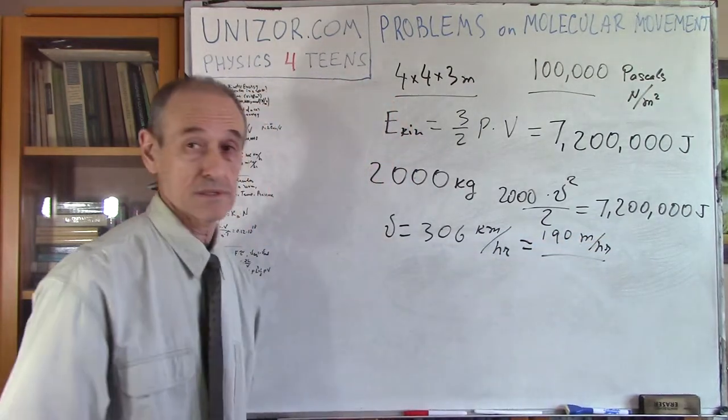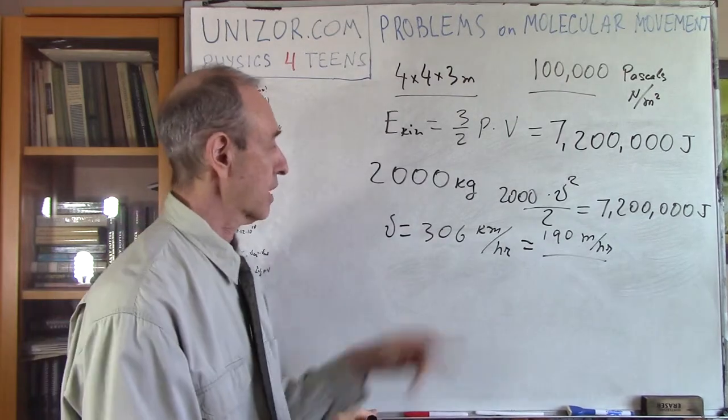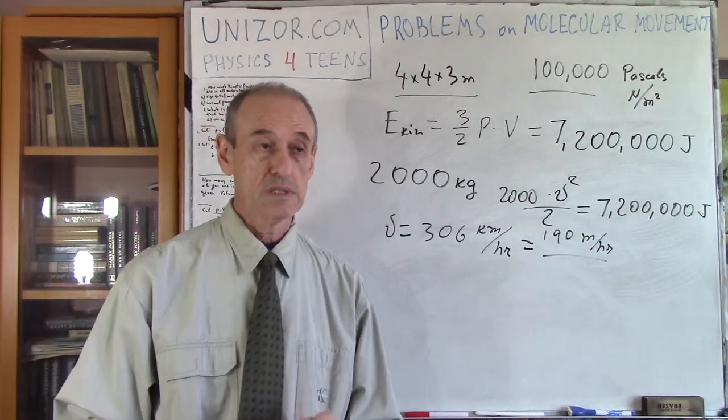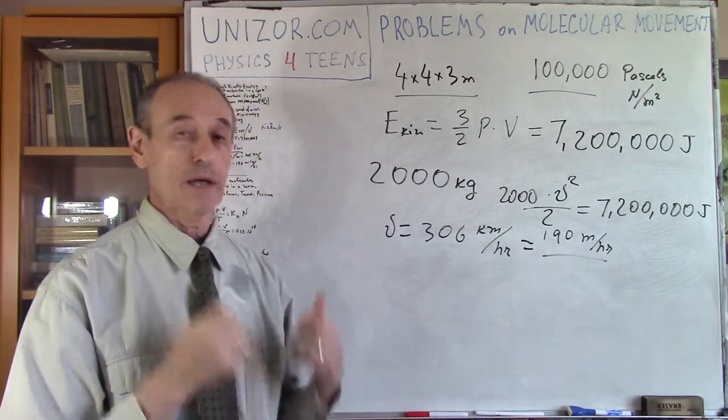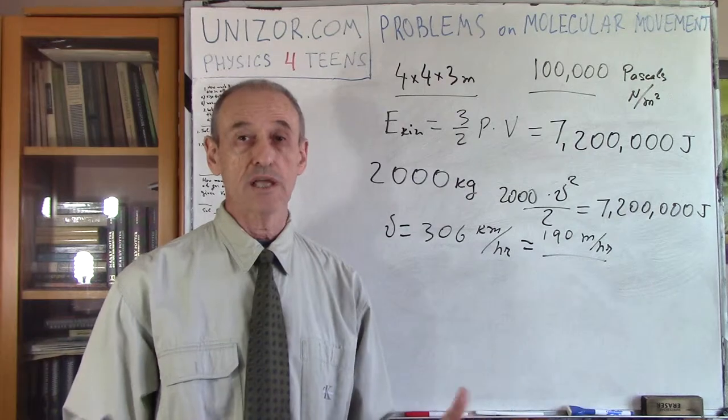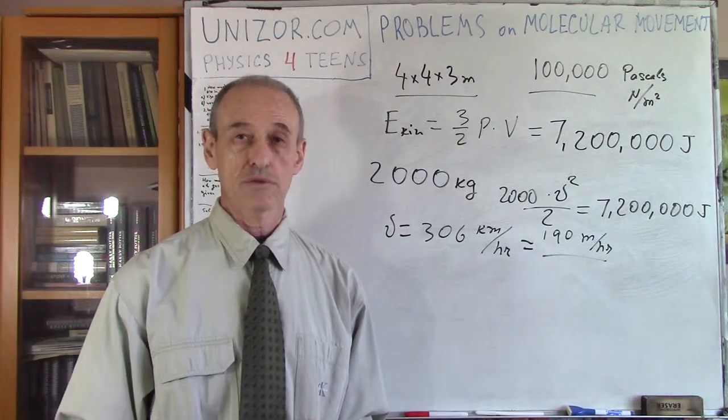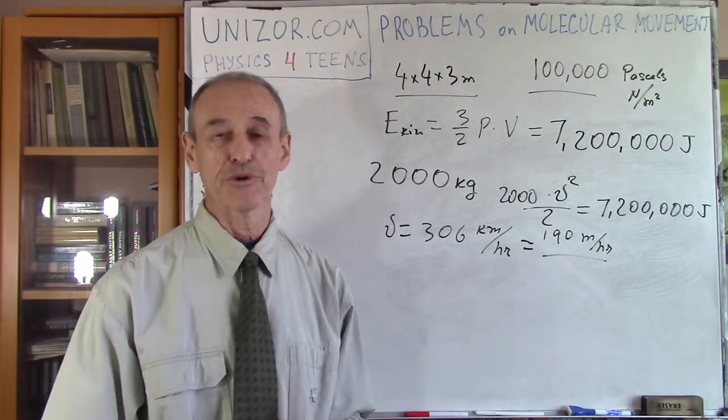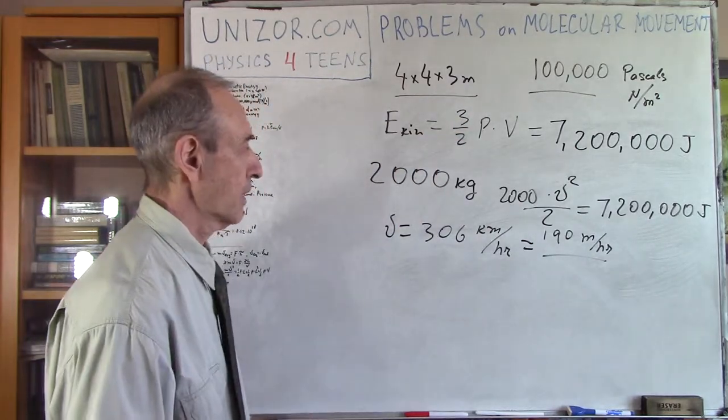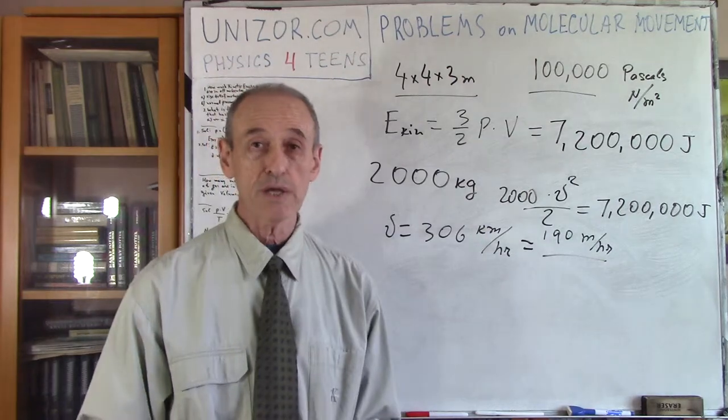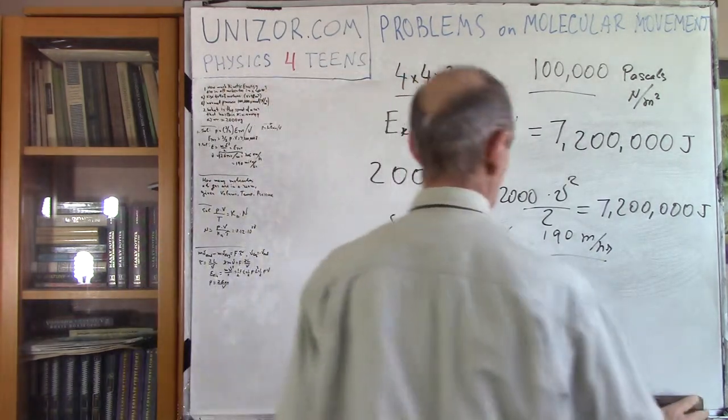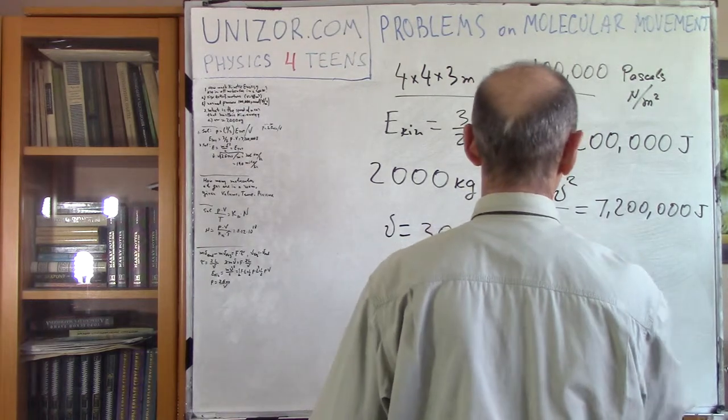That's fast! 190 miles an hour, 300 something kilometers per hour. That's really fast. So if the car has this speed, then its kinetic energy is equal to kinetic energy of all the molecules in this room. Well, not in this particular room. In the room of this size, under normal atmospheric pressure. So it's pretty much a lot. I mean, it's really a very high number. Alright, so that's it for my first problem.